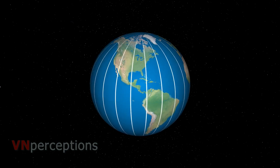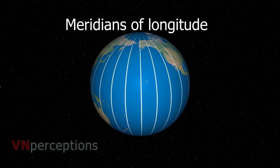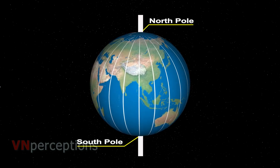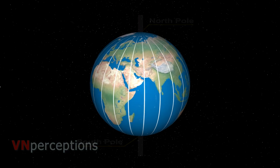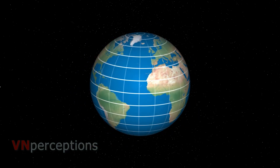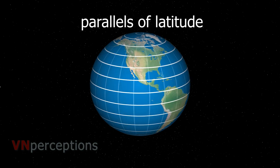The North-South lines are known as meridians of longitude and they extend from the North Pole to the South Pole. All these meridians are actually half circles. The East-West lines are known as parallels of latitude.